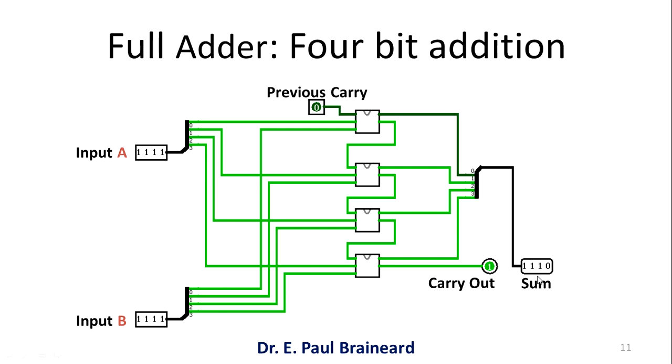We can see that addition of 1 1 1 1 four bits with another 4 1s results in a sum which is equal to 1 1 1 0 and carry is 1. This answer is same as what we have got in hand calculations.